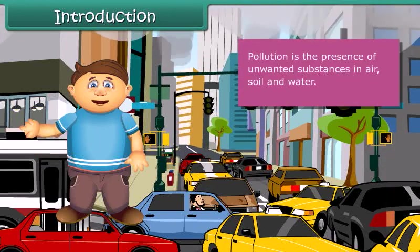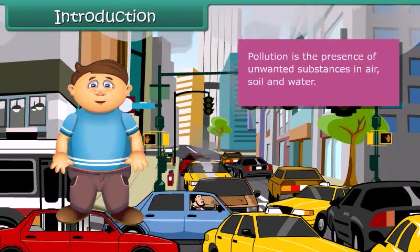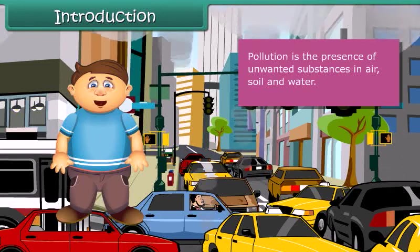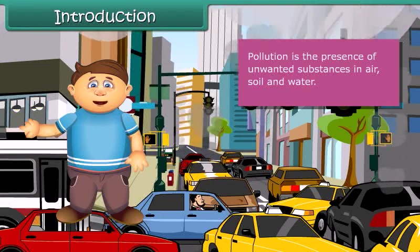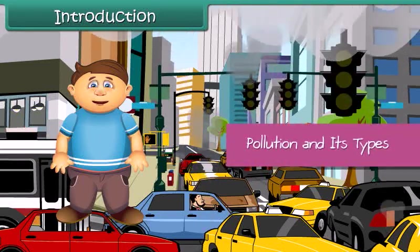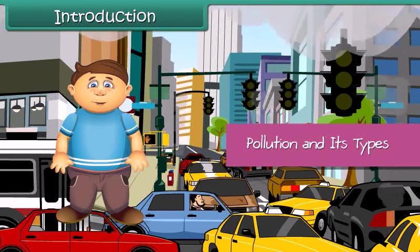We can define pollution as the presence of unwanted substances in air, soil and water. Now let's discuss in detail about pollution and its types.